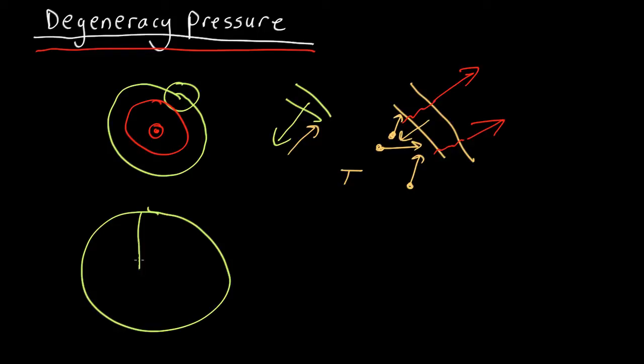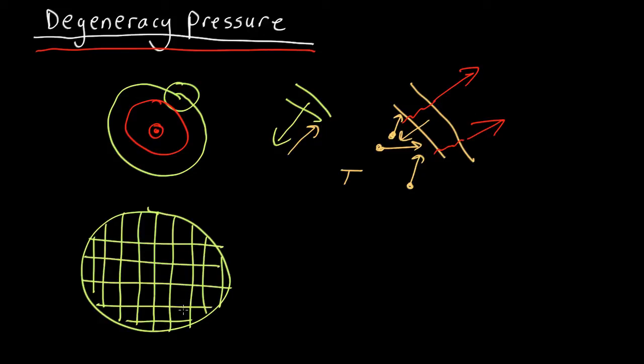So, one way to think about that would be to divide our white dwarf into little cubes and we'll put one electron in each cube. Now, the electrons can move back and forth inside the cubes, but they can't trespass into another cube, because that would be overlapping in state with another electron.